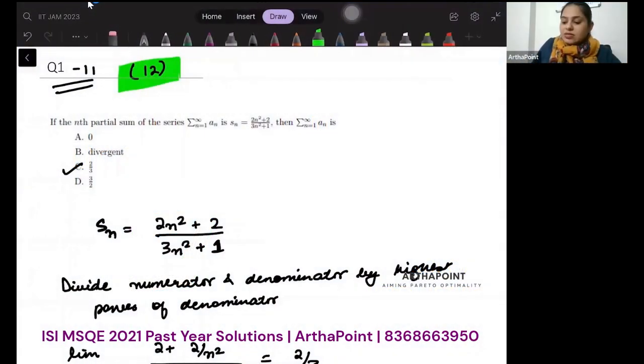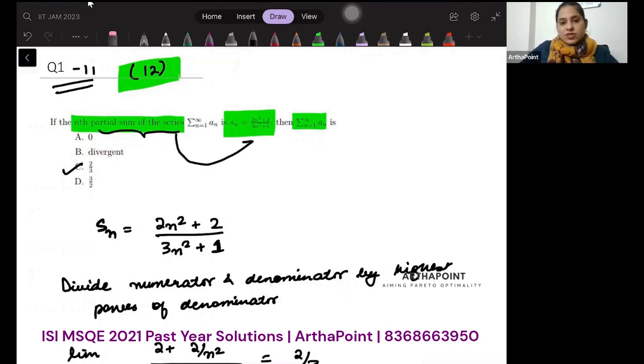If the nth partial sum of series is given by Sn, then what is the sum of this n going from 1 to infinity? It is very simple in this case. Wherever you are given the nth partial sum of the series, you just have to...